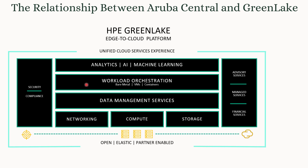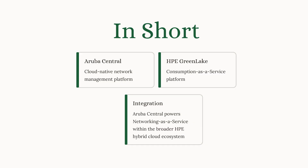HPE GreenLake is an edge-to-cloud platform providing a unified cloud service experience that contains multiple things, one of which is networking. That network component is indeed Aruba Central — you can clearly see Aruba Central is part of HPE GreenLake. In short, Aruba Central is where you do cloud-native network management, and HPE GreenLake is where you manage payments and subscriptions as a consumption-as-a-service platform. Aruba Central is network as a service within the broader HPE hybrid cloud ecosystem.